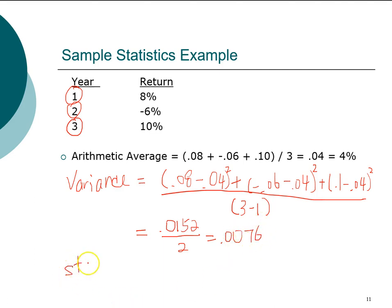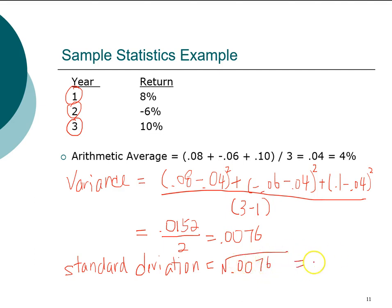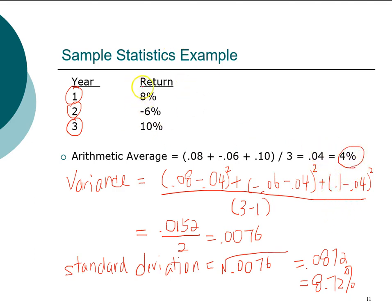The standard deviation is simply the square root of the variance. Taking the square root of 0.0076 gives us 0.0872, so our standard deviation is 8.72%. An important note: the average return and standard deviation can both be expressed as percentages — the average return is 4% and the standard deviation is 8.72%. However, the variance cannot be expressed as a percentage; you cannot convert the variance into a percentage.